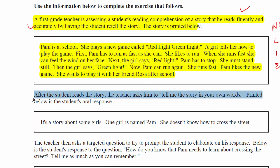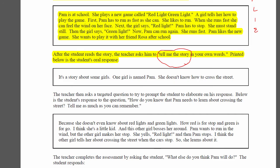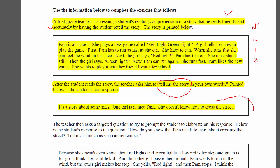After the student reads the story, the teacher asks him to retell it in his own words. The student responds: 'It's a story about some girls. One girl is named Pam. She doesn't know how to cross the street.' Clearly this child has read the text way too literally — the child missed the entire stated claim of the text, which is that they're talking about playing a game with another girl helping her. This child doesn't have literal comprehension.